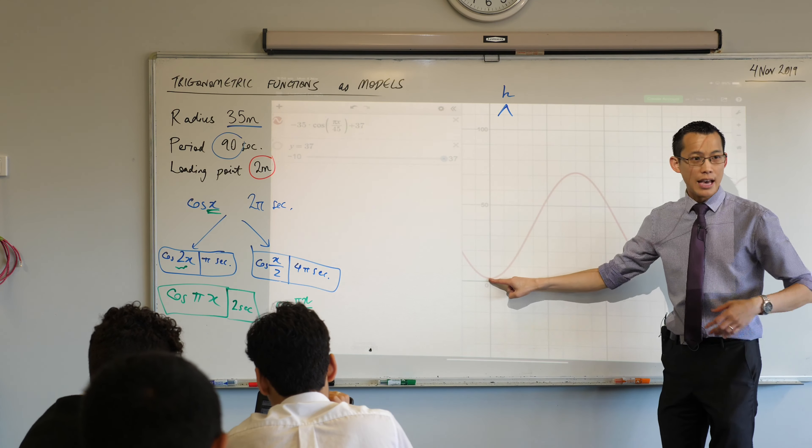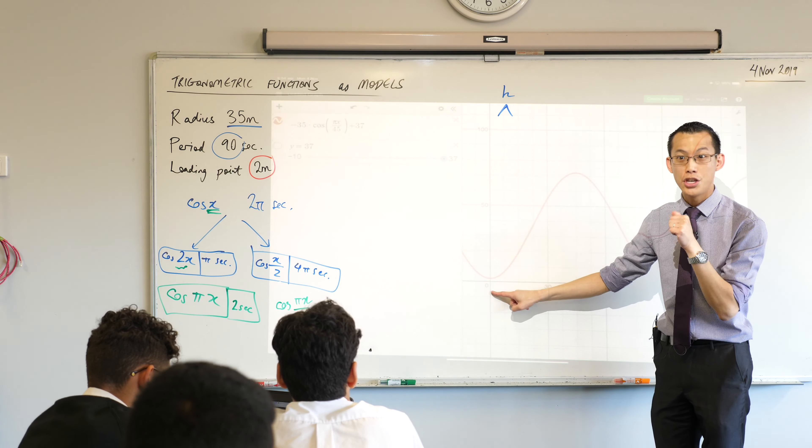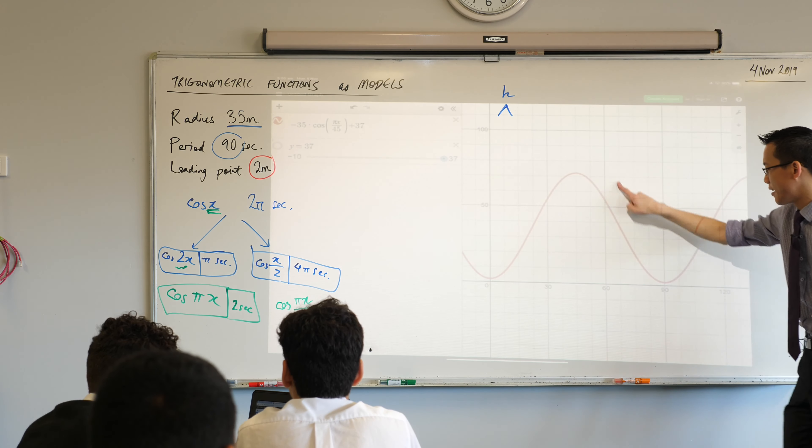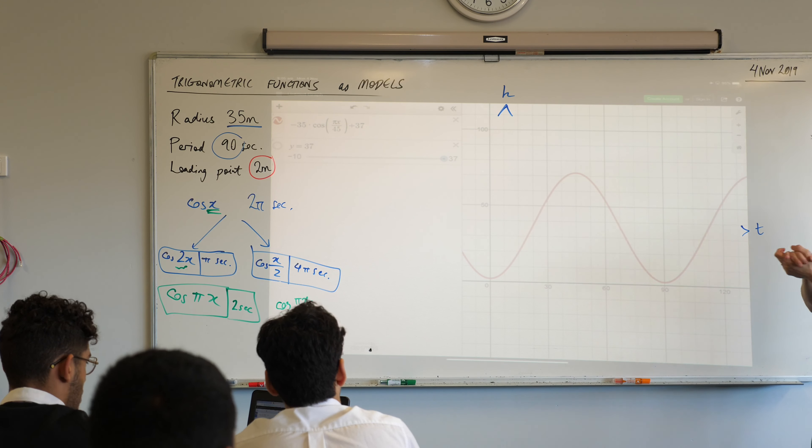Yeah. I'm pretty pleased with that. This looks real good. Yeah. You start down at, at time zero, how high are you above the ground? Two. You're at two, right? Because that's where the loading point is. Then you get on, it goes around and after 90 seconds, you're back to the start if you need to get off and so on. So far so good? Yes. Okay. So well done. You've just created the model.